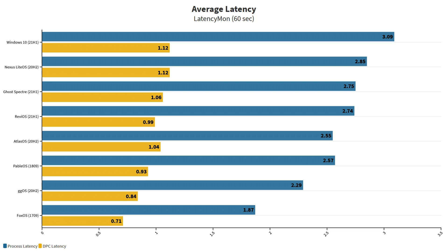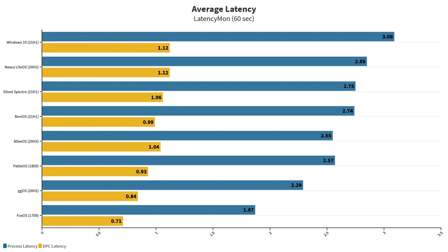Ghost Specter and Revi follow, but there's not really a big difference between most of these in latency. GGOS and Fox OS are the two that stand out as significantly lower than the rest. The fact that GGOS is 20H2 and has that low latency compared to others on 21H1 is impressive. Fox OS is the lowest, which makes sense since it's 1709. Also none of these power plans had idle disabled — idle maxes out your CPU to 100%, increases temperatures, but can lower latency a lot. I didn't have that enabled.